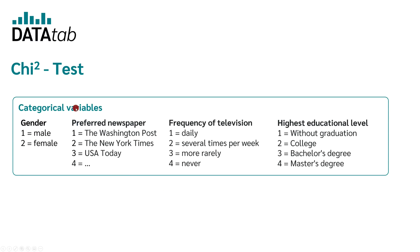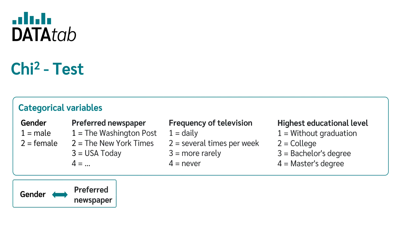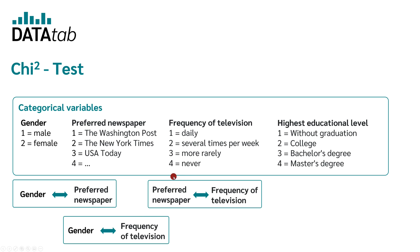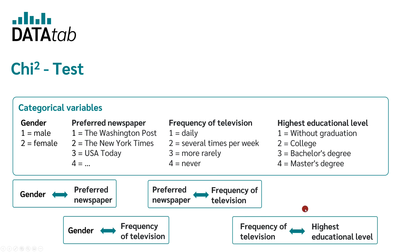So whenever we have two categorical variables and we want to check if there is a correlation between them, we use a chi-square test. We could, for example, be interested in whether there is a relationship between gender and the preferred newspaper, or between gender and the frequency of television, or between the preferred newspaper and the frequency of television, or between the frequency of television viewing and the highest level of education. Whenever we have two categorical variables for which we want to establish a relationship, we use the chi-square test.